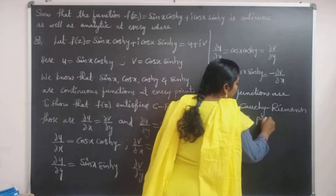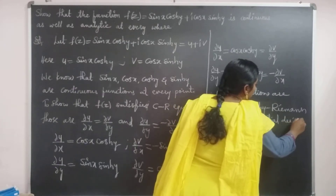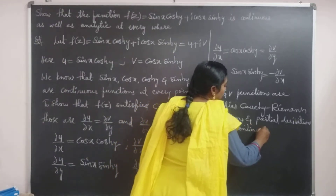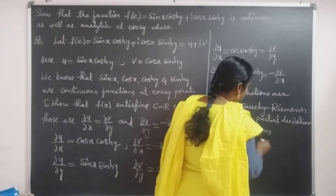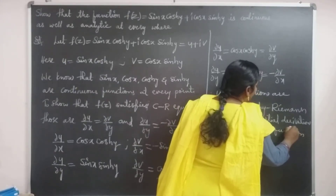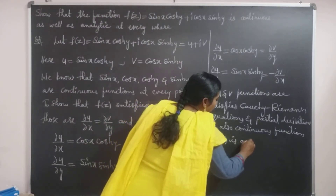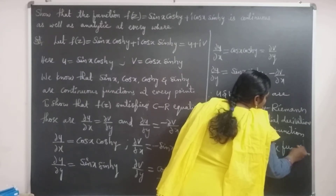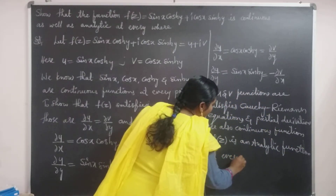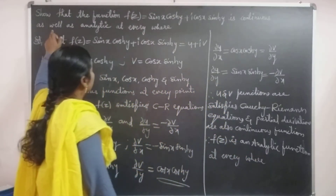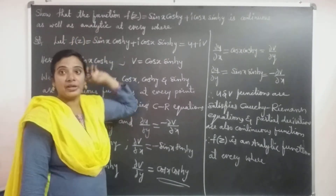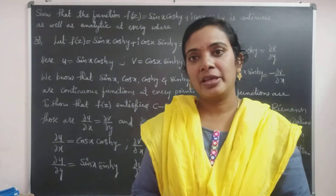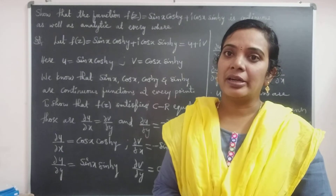The partial derivatives are also continuous functions because they are expressed in terms of cos and sin variables only. Therefore, f(z) is an analytic function everywhere. f(z) is continuous as well as analytic everywhere. To summarize: if the function satisfies the Cauchy-Riemann equations, then it is simply an analytic function.